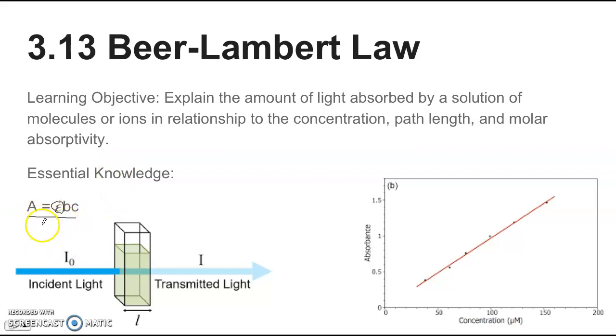If you compare this to the line equation, y = mx + b, we have absorbance on the y-axis and concentration on the x-axis. So the slope is going to be equal to epsilon times the path length. That's what the molar absorptivity is. And if you know what the path length is, you can figure out what the molar absorptivity is.